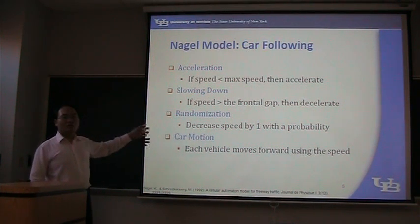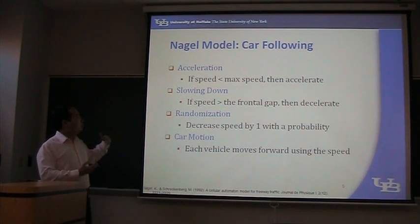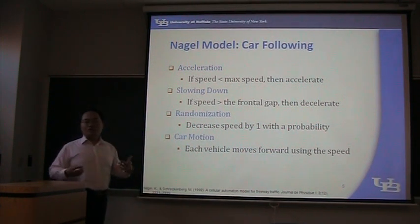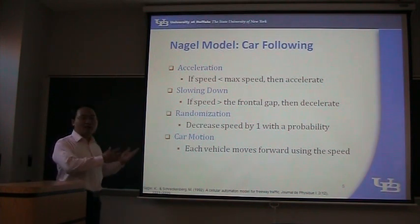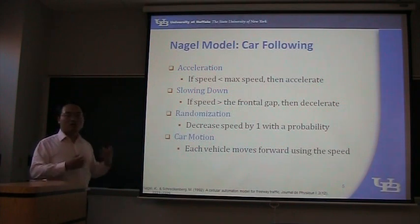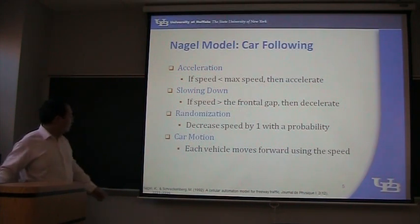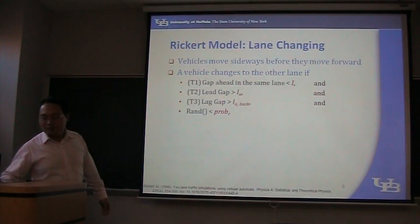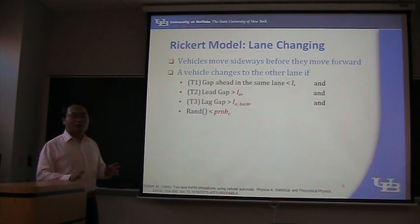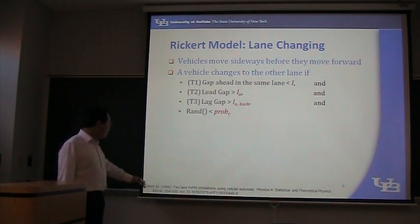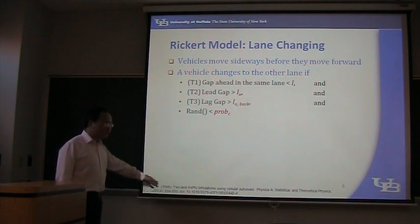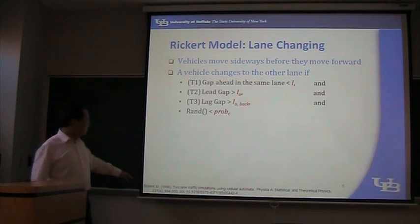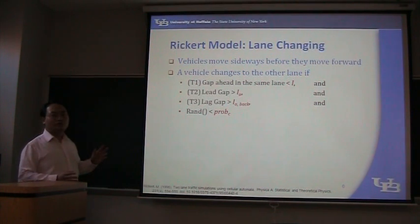So you will see it's very simple and very easy to implement, and it can avoid collision because of the second step. But it's very crude, so we cannot expect it to very realistically replicate traffic. This paper was published in 1992 — remember the name Kai Nagel. In the first paper, they only talked about the car-following model in cellular automata. Four years later, in a paper written by Rickert and Nagel, they proposed a lane changing model for cellular automata.